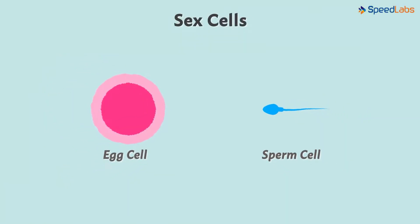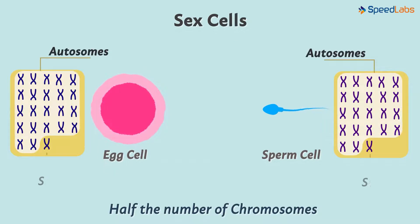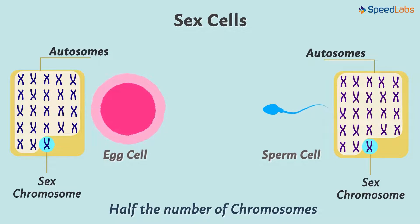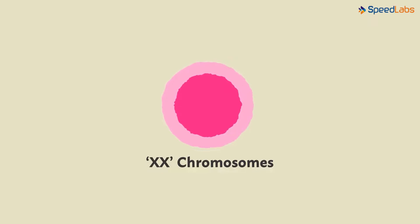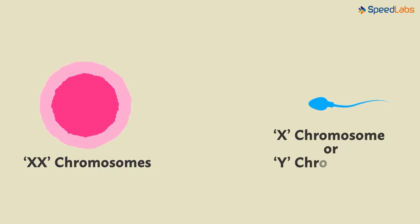The egg cell and the sperm cell are the sex cells. They do not have 23 pairs or 46 chromosomes; instead, they have half the number of chromosomes — one from each pair of autosomes and sex chromosomes. Look at the female egg cell: it doesn't matter which X chromosome of the sex chromosome pair is present, because both are X chromosomes. But the same does not apply to the male sex cell or sperm — it can either have an X chromosome or a Y chromosome in the 23rd chromosome position.